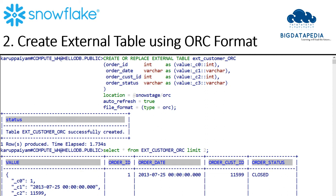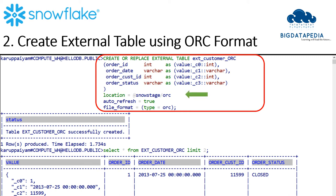Now we are going to create an external table using ORC format. Like Parquet format, here we are mapping all the columns and data types with the ORC schema. We also mention the location as the stage path for ORC and the file format as ORC. Once the command is executed, the table will be created and we can verify it using a SELECT clause. This is the way we can create Parquet and ORC format using an external table.